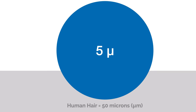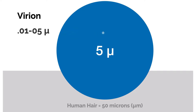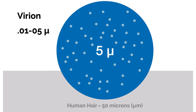We want to look at the virus particle. To do that, let's blow up this 5 micron droplet and look at a single virus particle — we call a virus particle a virion, that's a single particle. It's really small: about 0.01 to 0.05 microns. That means that a 5 micron droplet, or any droplet, can carry a few, a handful, or it can carry 100, and in some cases potentially thousands of virions — hundreds or thousands of virus particles.